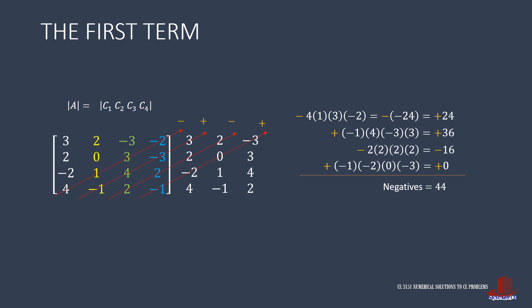After that, subtract the negatives from the positives: negative 22 minus 44, giving negative 66 for the first partial determinant.